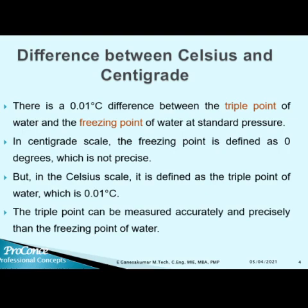That is the difference between Celsius and centigrade. In the centigrade scale, the freezing point is defined as 0.01 degree, which is not precise. But in the Celsius scale, it is defined as the triple point of water, which is 0.01 degree Celsius. The triple point can be measured more accurately and precisely than the freezing point of water. So Celsius is more precise than centigrade.